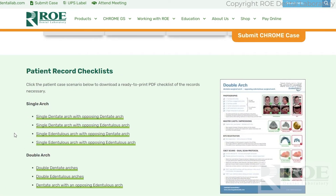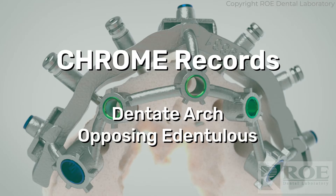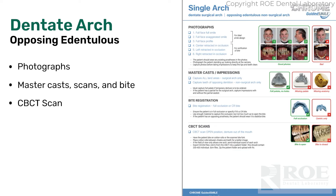So let's go through a single dentate arch with opposing edentulous. Here are the basic records, but let's go through the protocol for collecting them. The records for single arch are very straightforward. We need a certain set of photographs, master casts or scans and a bite, and then a CBCT scan.